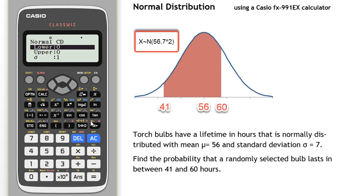Now we simply put in the lower end of the region we're interested in, which is 41, hit the equals button. The upper end is 60, hit the equals button.